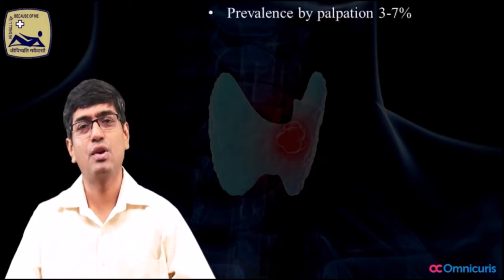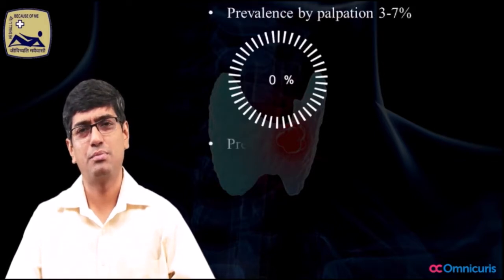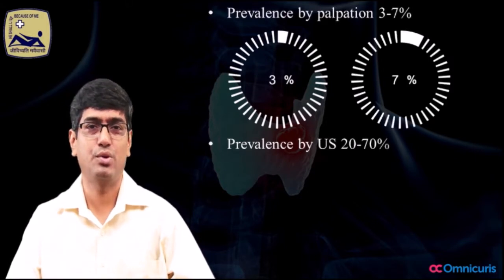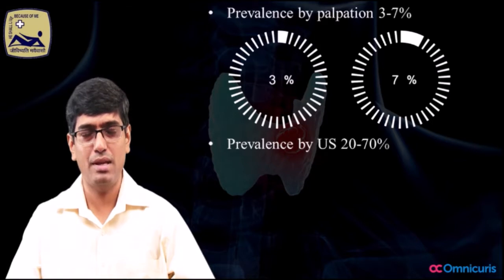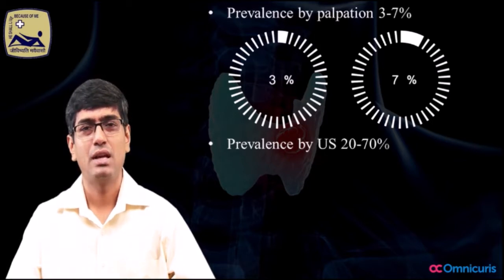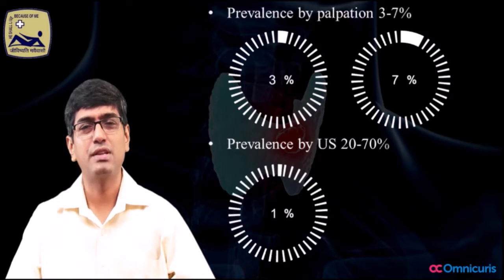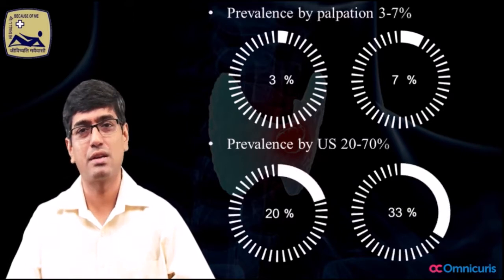When we talk about prevalence of thyroid nodules, you've got to remember the prevalence would depend definitely on how we are detecting the thyroid nodule. If we are clinically examining someone for a thyroid nodule by palpation, the prevalence would range somewhere between 3 to 7%. However, if we are using something like ultrasonography, the prevalence is going to be much much higher.